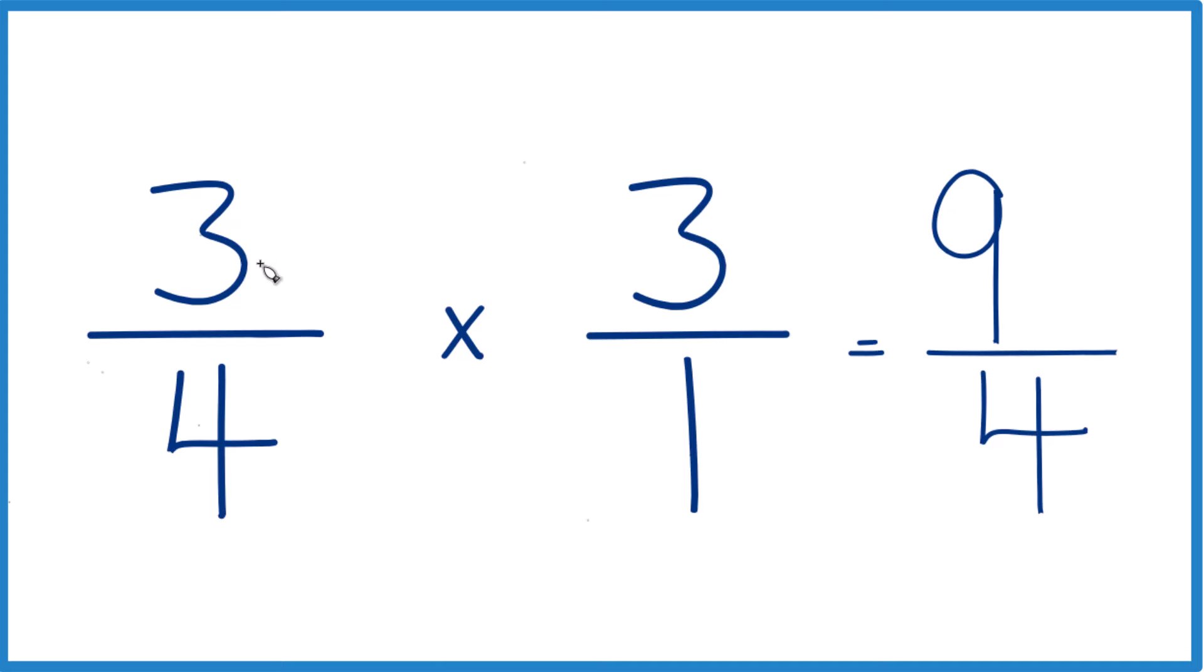But that's the same answer we get if we divide three-fourths by one-third. Nine-fourths, that's an improper fraction. The numerator nine is larger than the denominator. Let's change it to a mixed number.